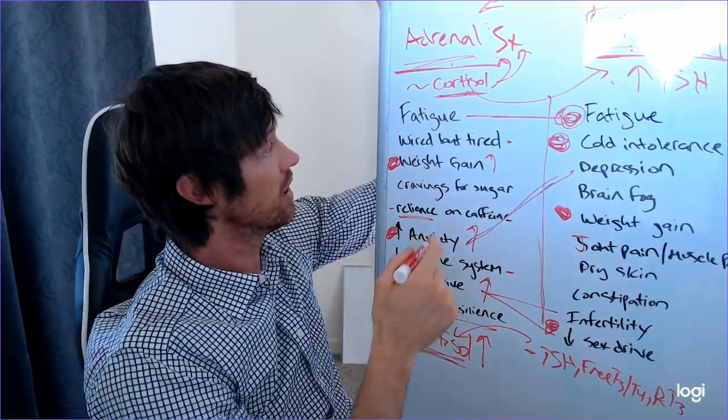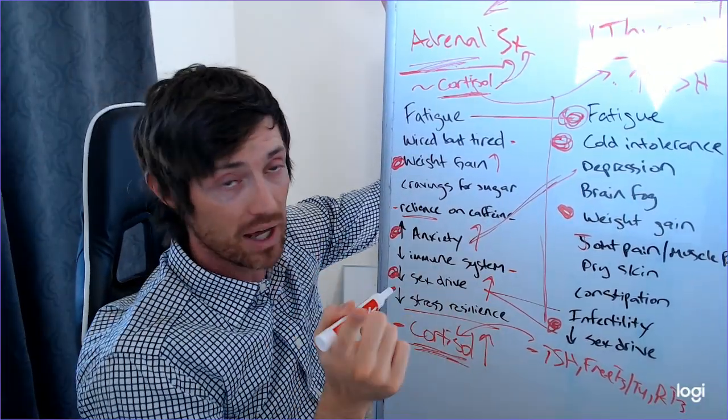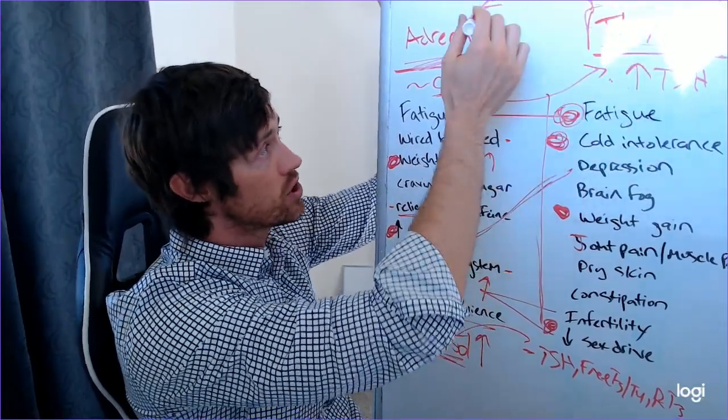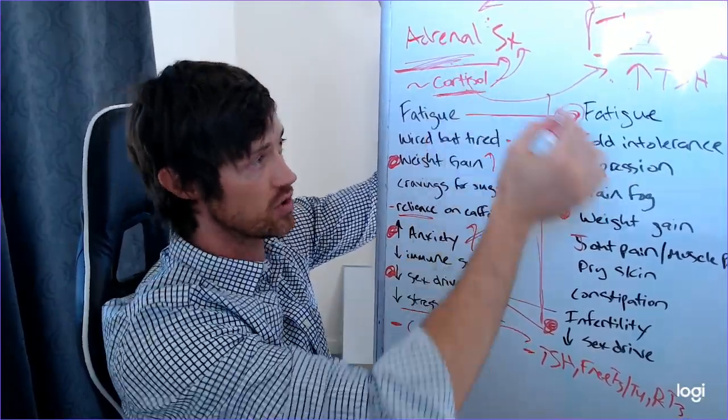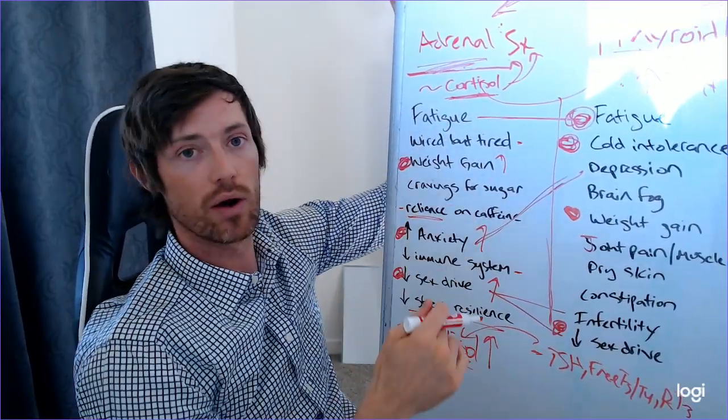But it's also possible for you to have adrenal problems first, which then cause thyroid problems. But let me say this, in those cases, they're a lot easier to treat than the reverse. So thyroid to adrenal is much more difficult to treat than adrenal to thyroid. Just because the thyroid tends to have more of an impact on your adrenal function versus the other way around.